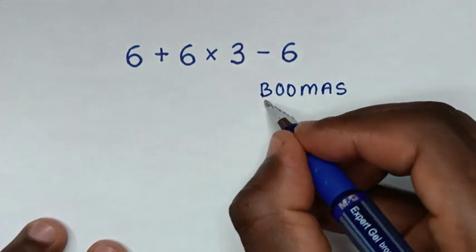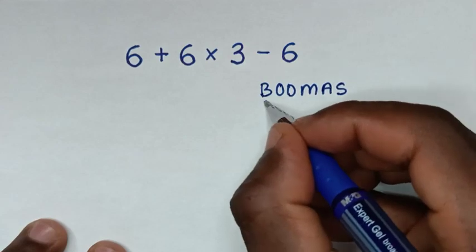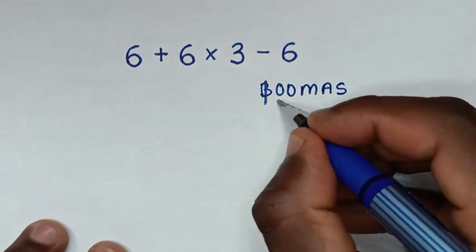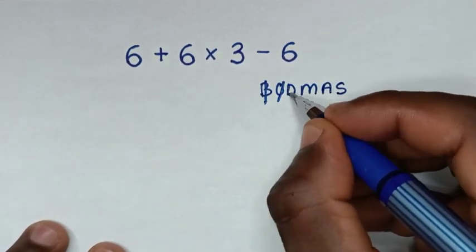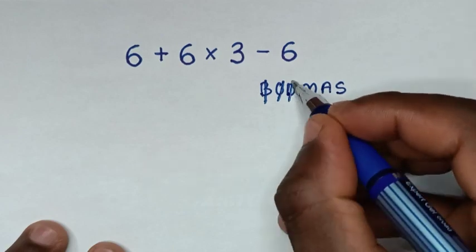Whereas B is bracket, in this problem we don't have brackets. Also we don't have orders or exponents. D is division, we don't have division.